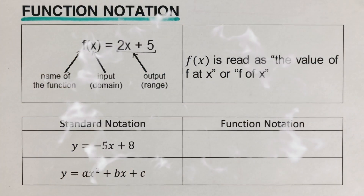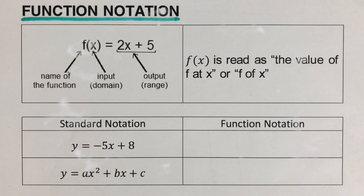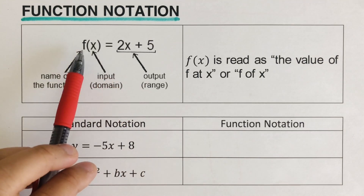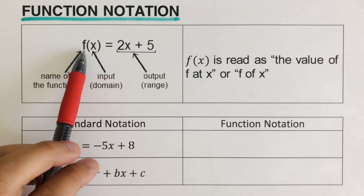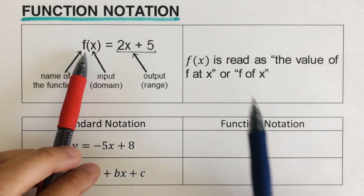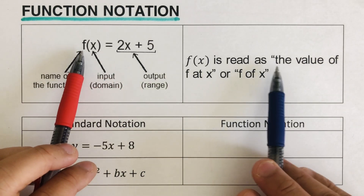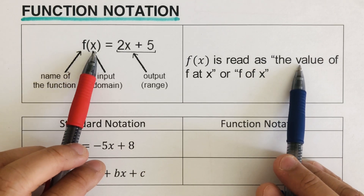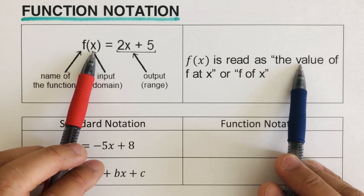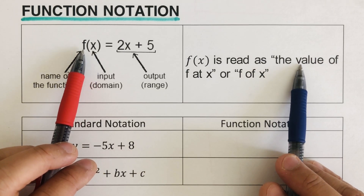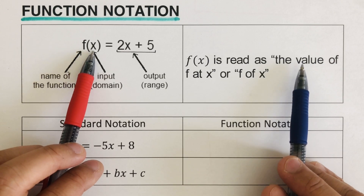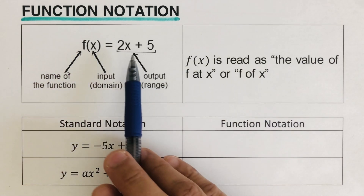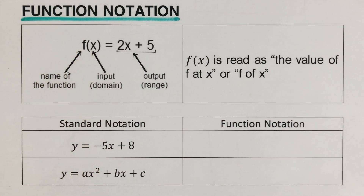Hello, everyone. In this video, we're going to talk about function notation. So this is an example of a function. This notation that we have here is read as 'the value of f at x,' or we can say f of x is equal to 2x plus 5.